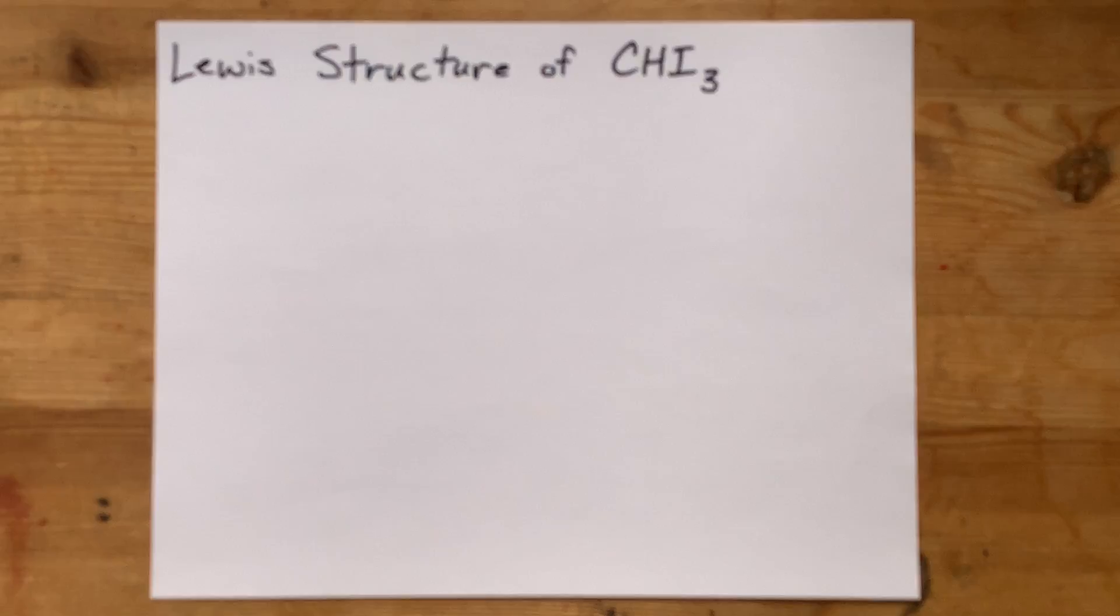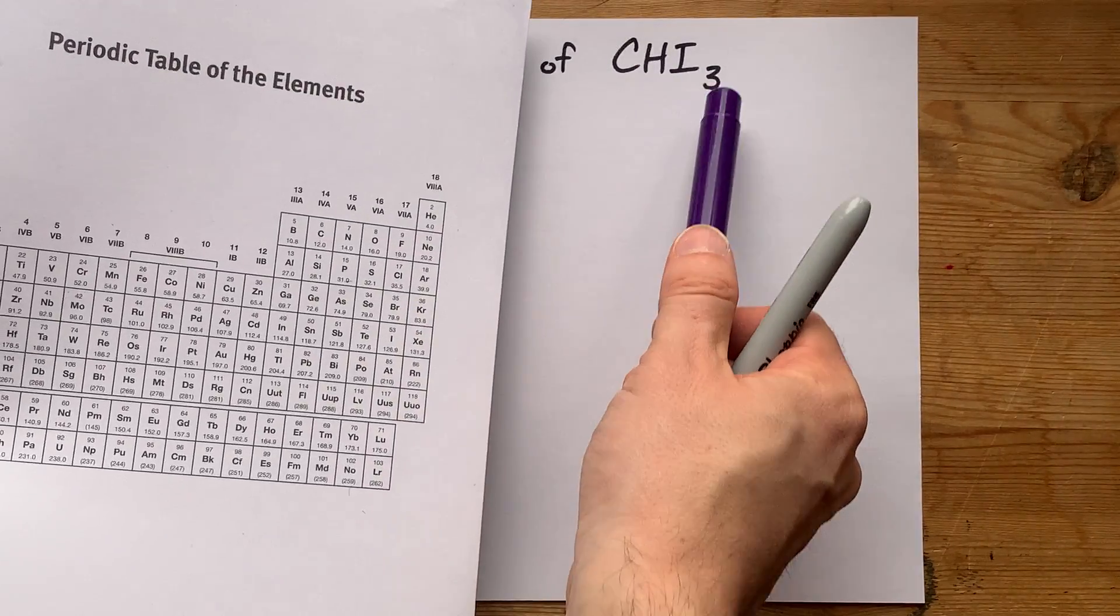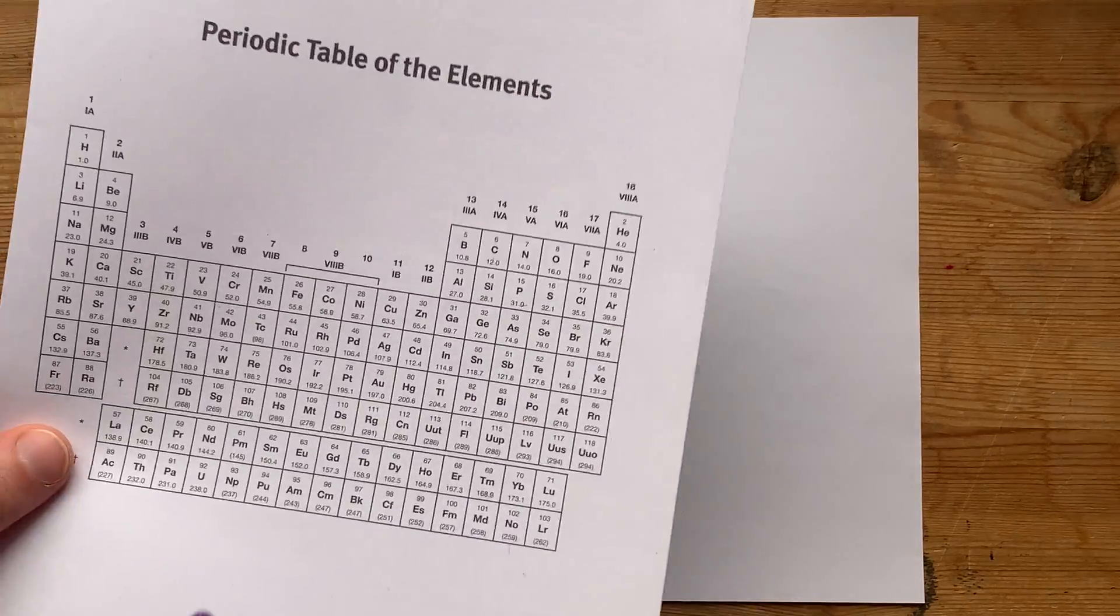We're going to draw the Lewis structure for CHI3, or triiodoethane.